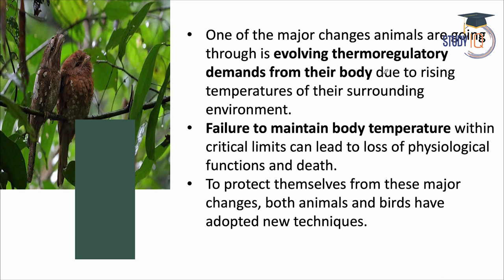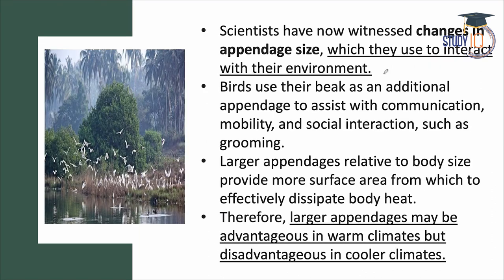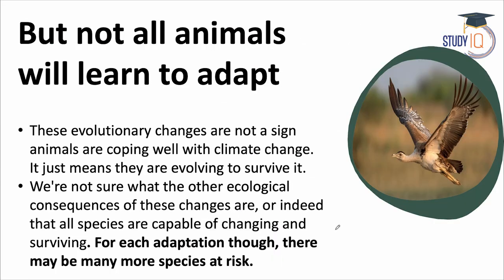There are major changes in animals' thermoregulatory systems. If thermoregulatory evolution occurs, it can help birds survive summer, but in winter it may not help, causing their body temperature to fail and their population to decrease. Similarly, increased appendage size is an advantage in warm climates, but becomes a disadvantage in cooler climates.